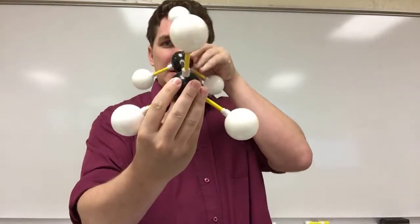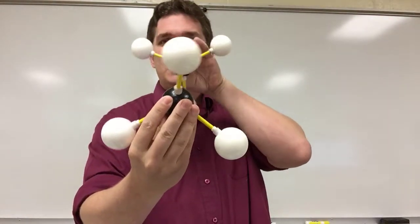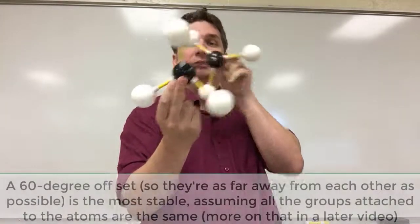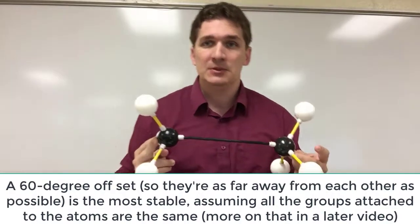But if we rotate it, I think it's 60 degrees, we can get a situation where if we look down the bond, it looks like none of the atoms see each other. And this is going to be the more stable configuration.